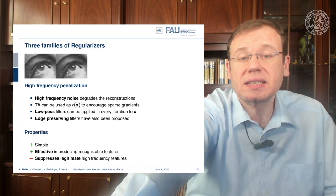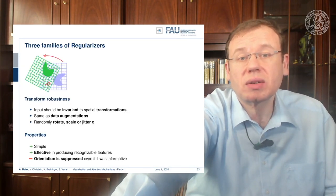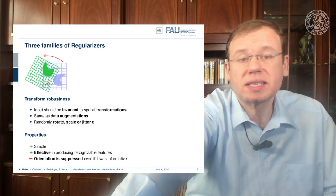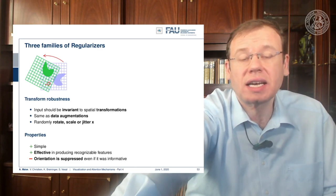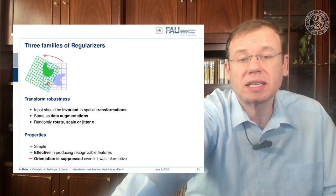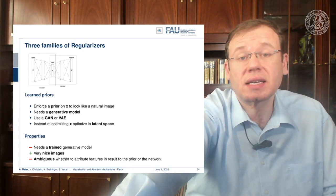You could also work with low-pass and other edge-preserving filters. TV regularization is simple and effective, though it will also suppress real edges and other high-frequency information. Another regularizer is transform robustness: the input should be invariant to spatial transformation, similar to data augmentation. You can randomly rotate, scale, or jitter x — this is simple and effective in producing recognizable features, but the orientation may be suppressed even if it was informative.